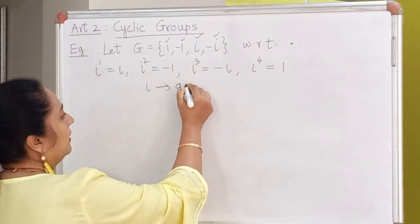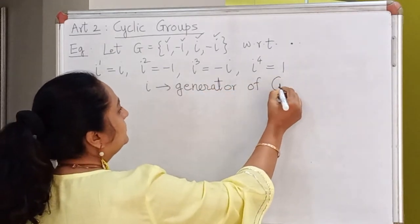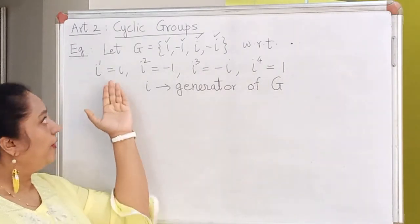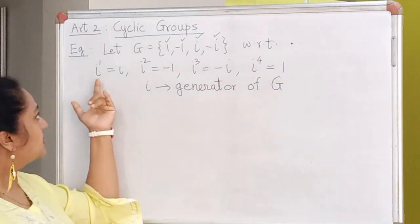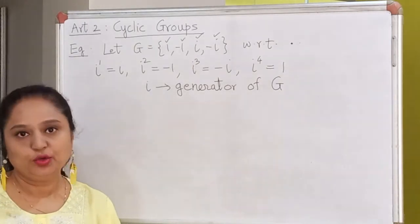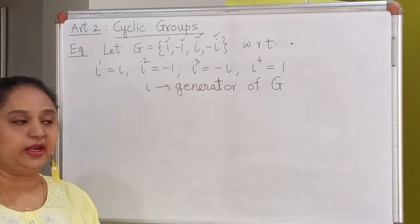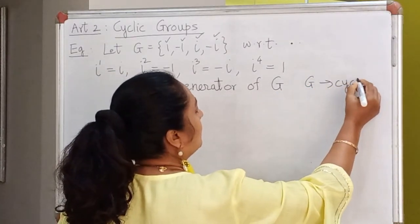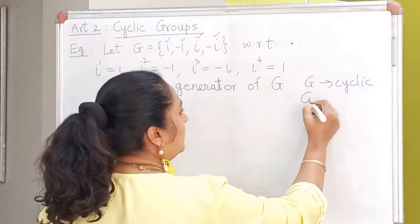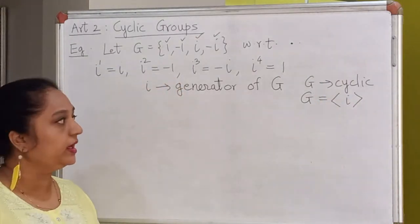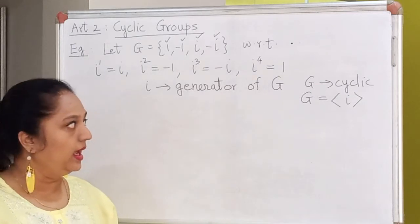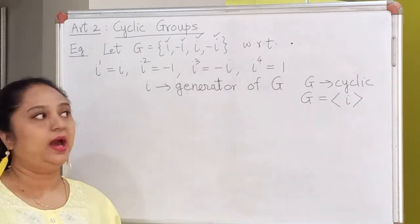We call this element i a generator of the group. If by taking different integral powers of the element we manage to get all elements of the group, then i is said to be a generator of the group. We will say that G is a cyclic group, and this is the notation we use: G equals angular brackets i. This notation means that G is a cyclic group with i as a generator.